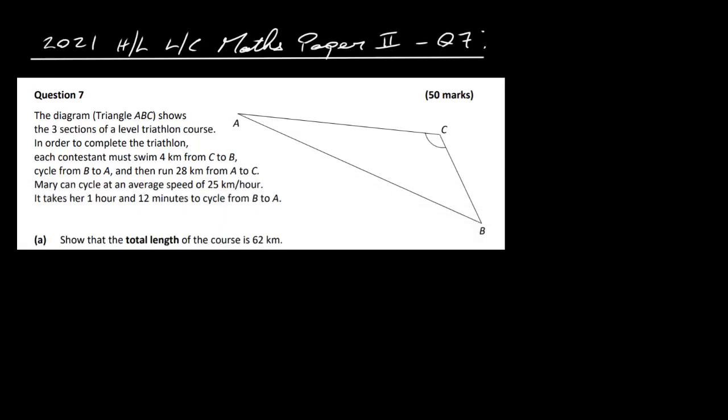Let's have a look at the 2021 Higher Level Leaving Cert Maths Paper 2, Question 7. The diagram of triangle ABC shows three sections of a levelled triathlon course. Each contestant must swim four kilometres from C to B, cycle from B to A, and then run 28 kilometres from A to C.